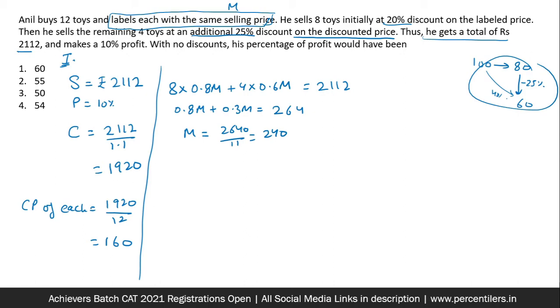So, you know, CP of each article, you know, MP of each article. So from 160 to 240, there is a 50% profit. If no discounts were there, his profit percentage would have been clearly, clearly, clearly 50%.